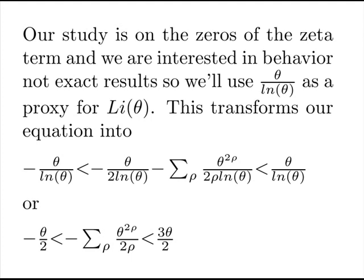This transforms our equation as follows. And note, we get rid of the log integral of half the value. Also note, it remains linear in theta, the bounds at least. And we only have to deal with the zeros of the zeta term.